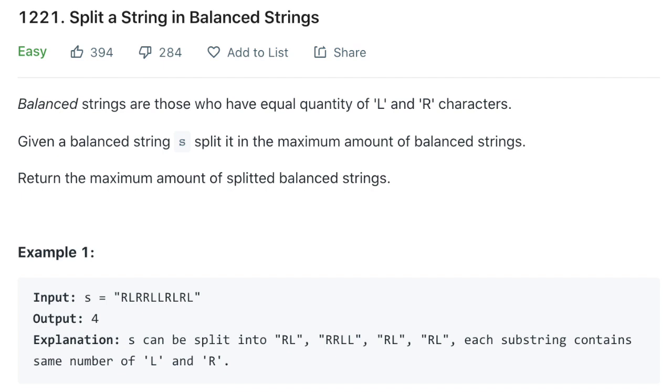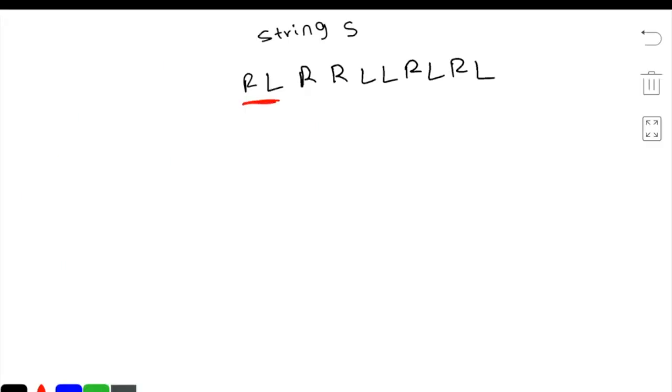In this problem statement, you're given a string s with R's and L's, and you want to split it into balanced strings. A string is balanced if, for example here, the number of R's on one side is equal to the number of L's. This is how we know if a string is balanced or not.